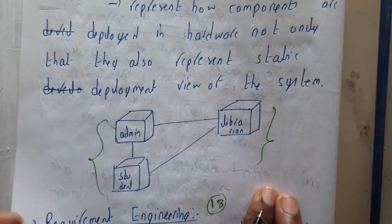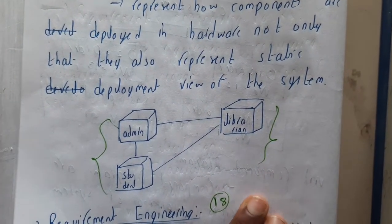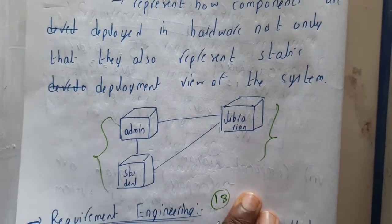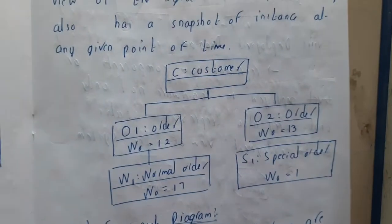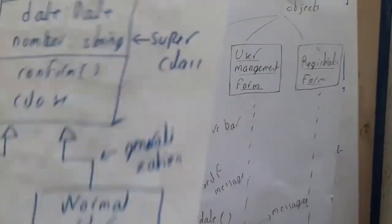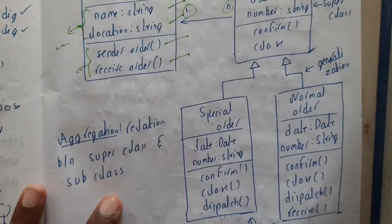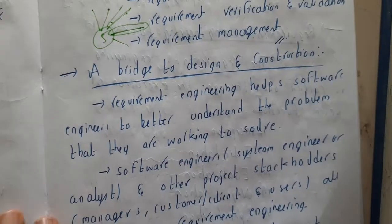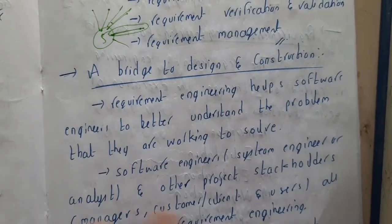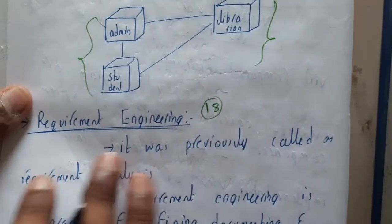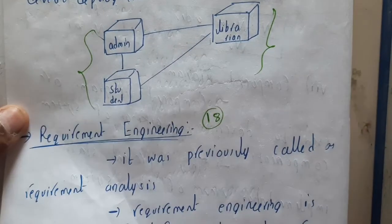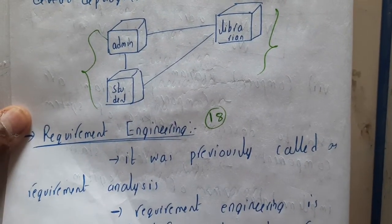We'll be discussing all these diagrams again in our next lectures, so nothing to worry about. I hope you got some basic idea of the eight different UML diagrams. In the next lecture, we are going to start the main process of requirement gathering — that is, requirement engineering. See you in the next lecture, thank you for watching.